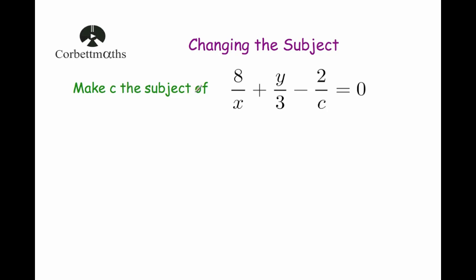Our next question says: make c the subject of 8 over x plus y over 3 subtract 2 over c equals 0. We want to make c the subject, so we want c equals. We have got our three fractions, so let's give them all a common denominator.